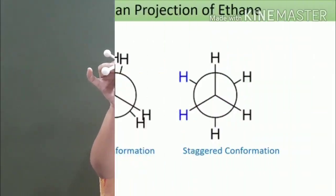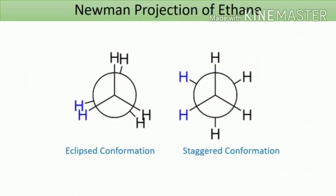How do we show this on paper? Both conformations — eclipsed and staggered — are shown together for comparison. The Newman projection is in fact the most suitable way to represent the conformations of molecules.